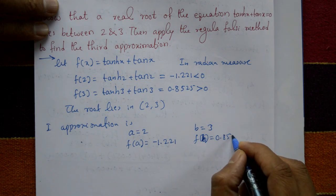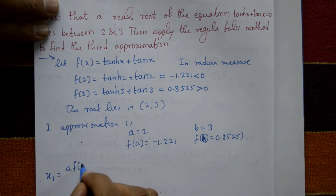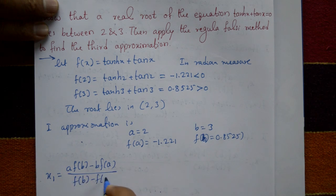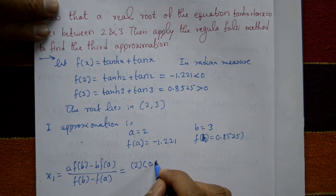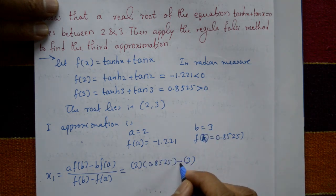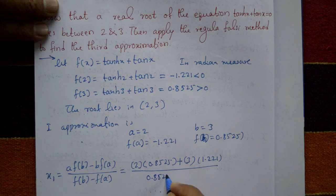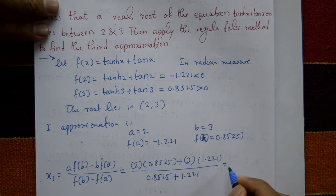The first approximation x1 = [a·f(b) - b·f(a)] / [f(b) - f(a)]. Substituting: a = 2, b = 3, f(b) = 0.8525, f(a) = -1.221. So x1 = [2 × 0.8525 - 3 × (-1.221)] / [0.8525 - (-1.221)], which equals 2.59.